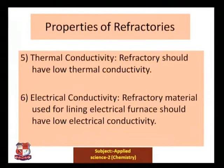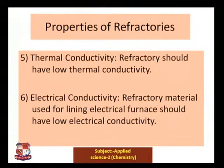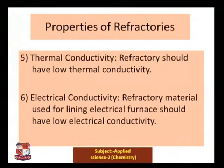The fifth property is thermal conductivity. A refractory should have low thermal conductivity, and electrical conductivity of the refractory should also be low. Because of this low electrical conductivity, refractory materials can be used for lining electrical furnaces.